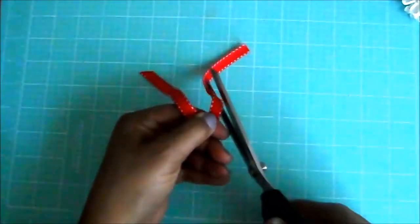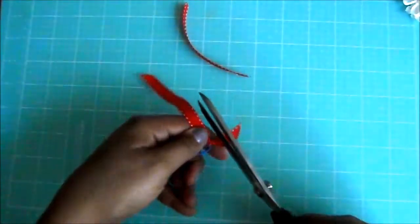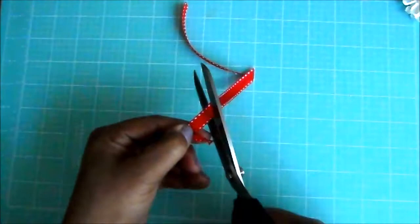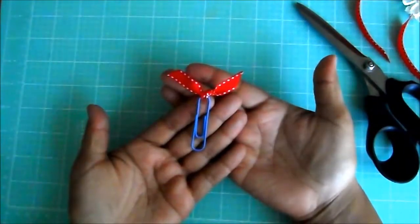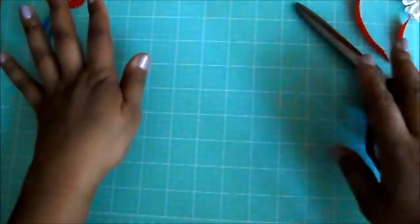You're just going to trim them, they're going to look like little rabbit ears. That's it, you've got a cute little ribbon. Let's put that one to the side and move on to the next one.